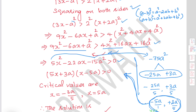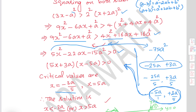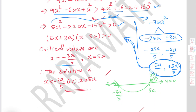Find the critical values by equating each factor to zero: x equals minus 3a over 5 and x equals 5a. Since the quadratic is U-shaped and greater than 0, the solution lies above the x-axis — outside the roots. Therefore x is less than minus 3a over 5 or x is greater than 5a.